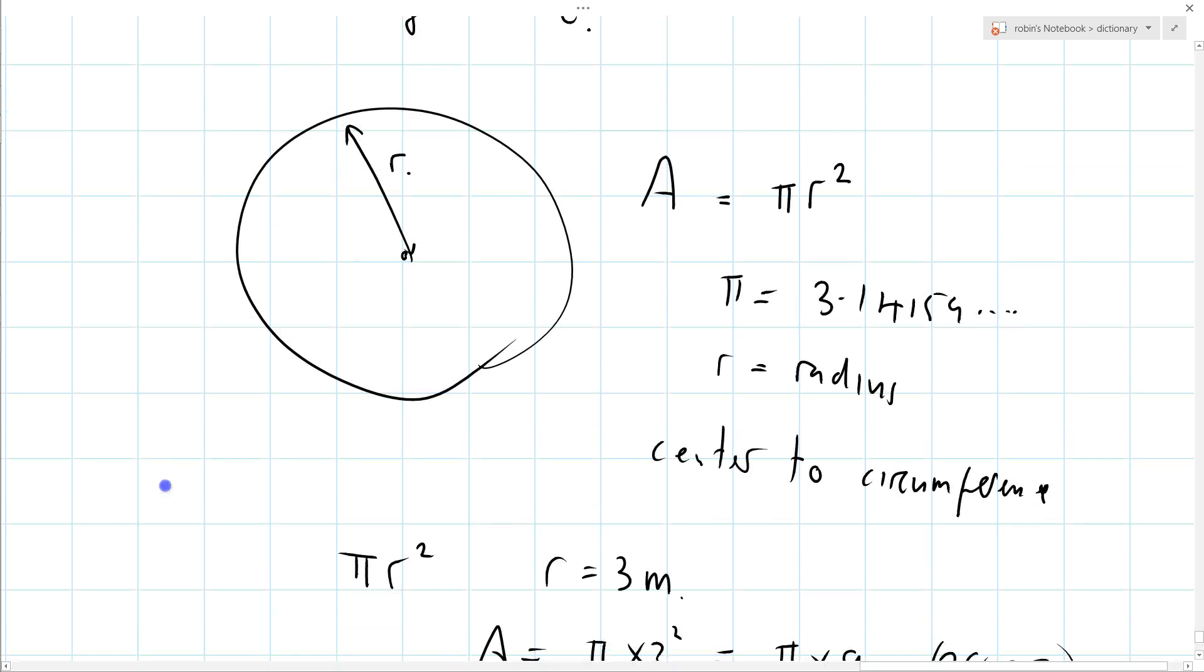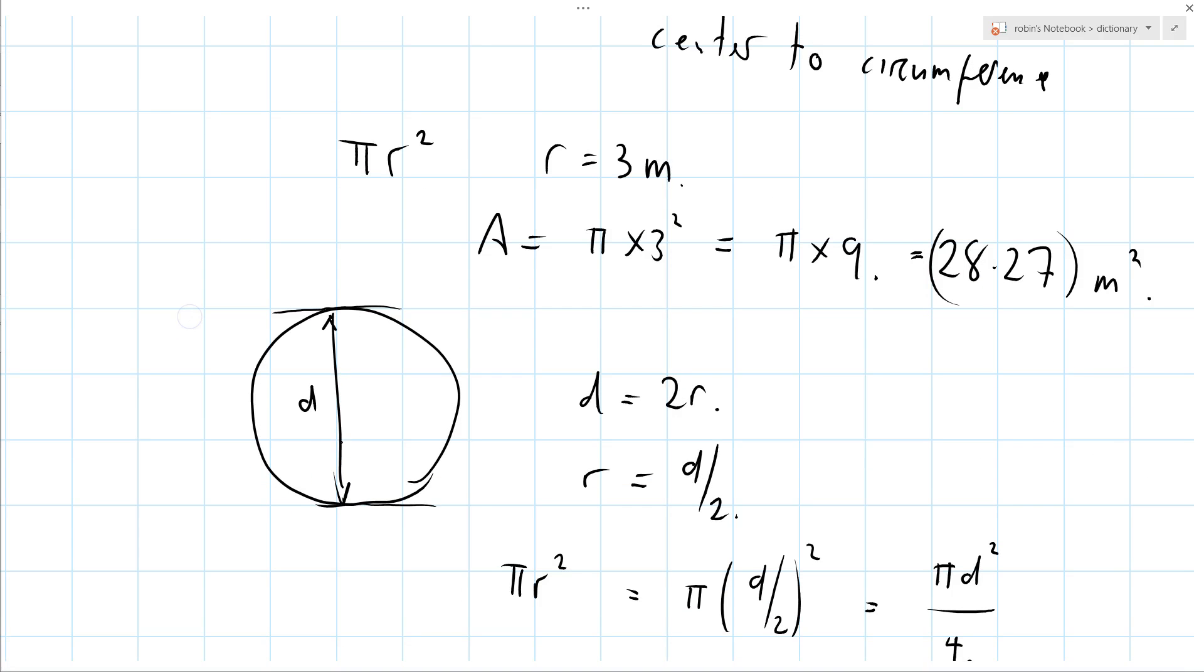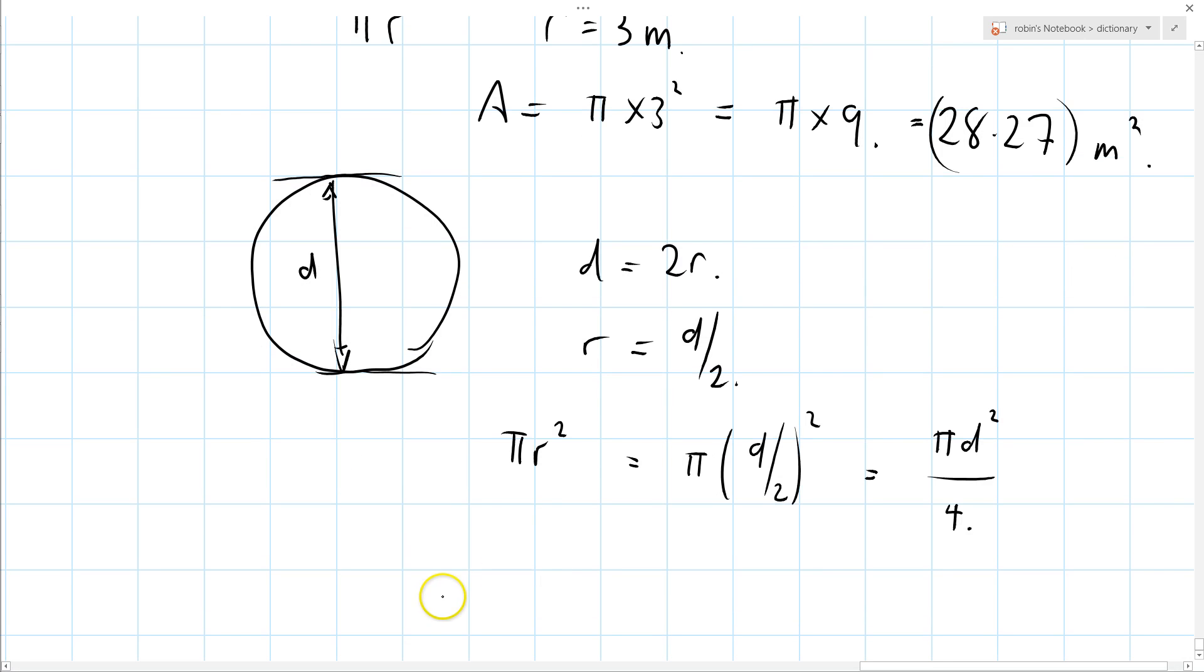So the mathematician defines it in terms of the radius. The engineer, well, my brother anyway, defines it in terms of the diameter. And the area is equal to pi d squared over 4. There you go. Stop.